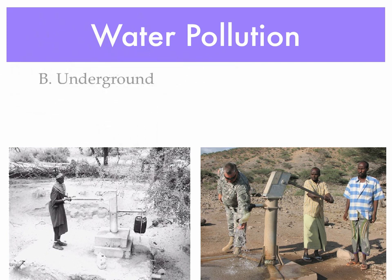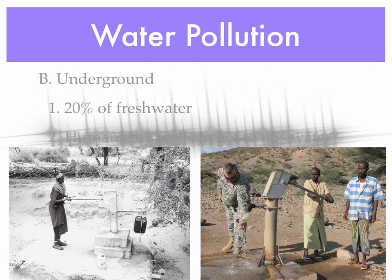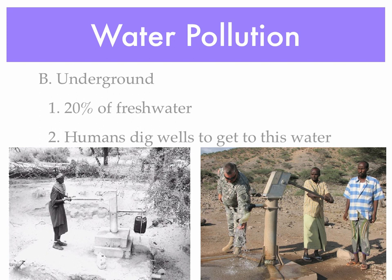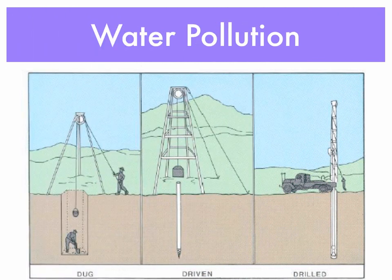The second largest source of fresh water is actually water that's underground, and that accounts for about 20% of the fresh water. Now, water underground is not always easy to get to. We can dig wells to get to that water, but that requires quite a bit of work. It's not always easy, and it's sometimes hard to find where to dig the wells. There are different ways to access it, from a simple hole dug in the ground all the way up to drilling for water. The more we use the water, often the deeper we have to go, and the harder it gets to access.